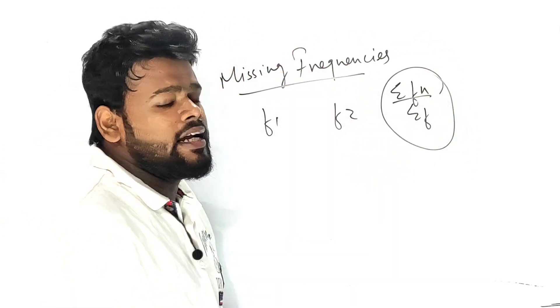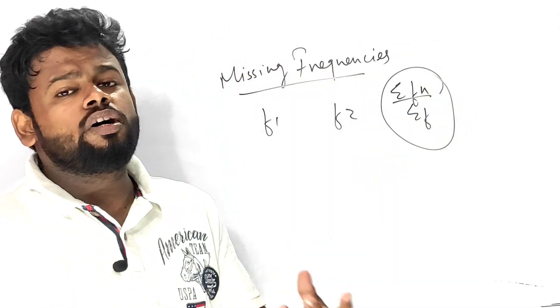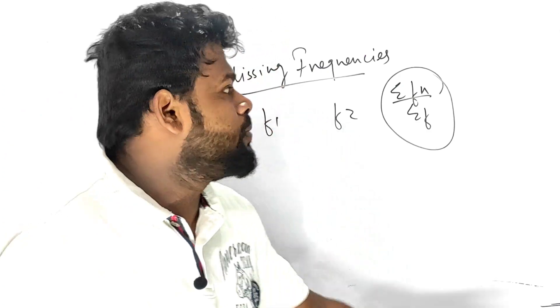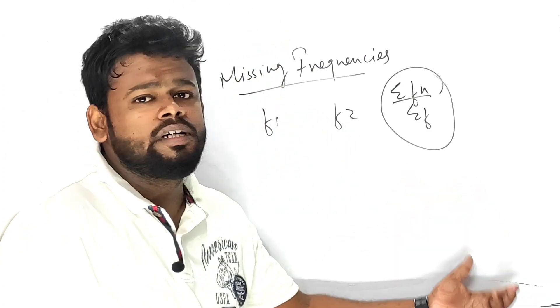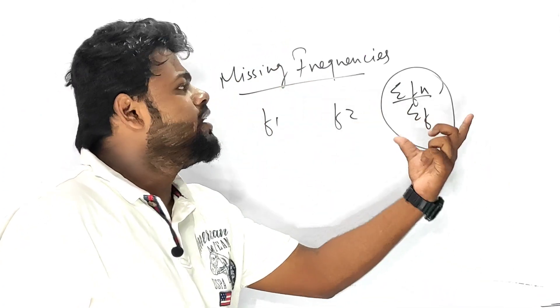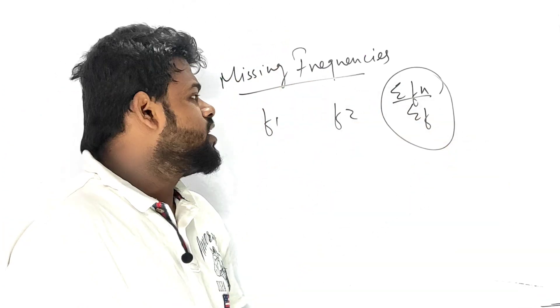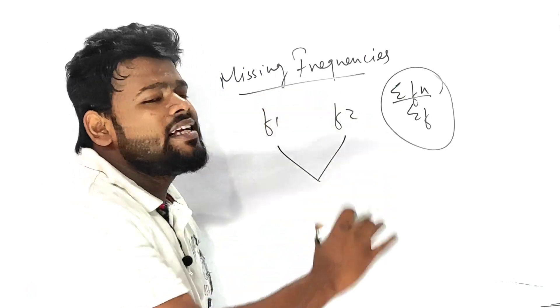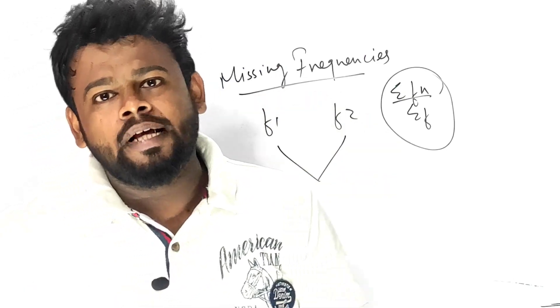The reason is that you get the answer more easily with the assumed mean method. You only have 90 minutes to complete all the questions, so you need to work efficiently. I strongly recommend using the assumed mean method.